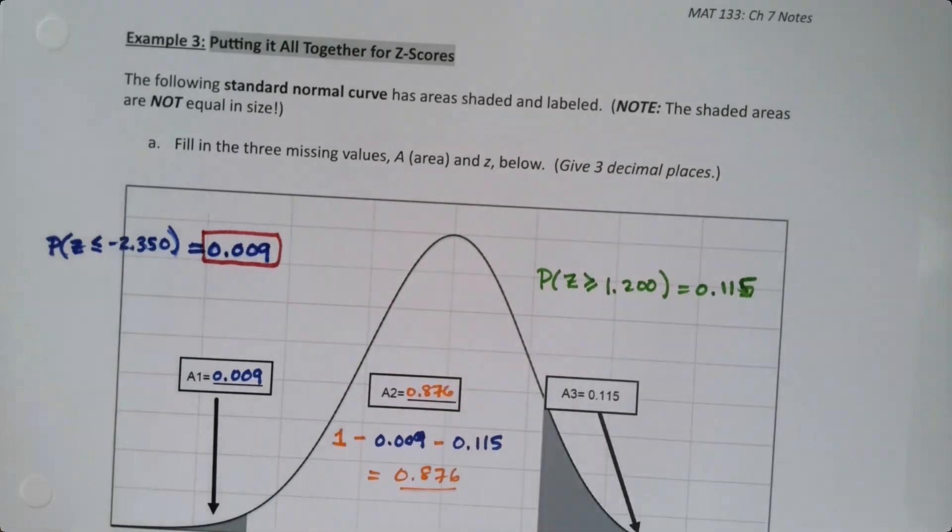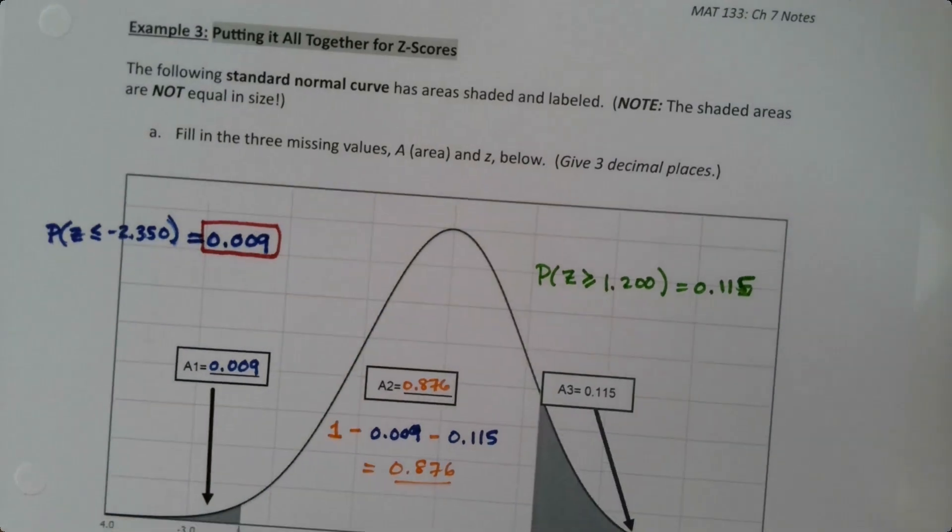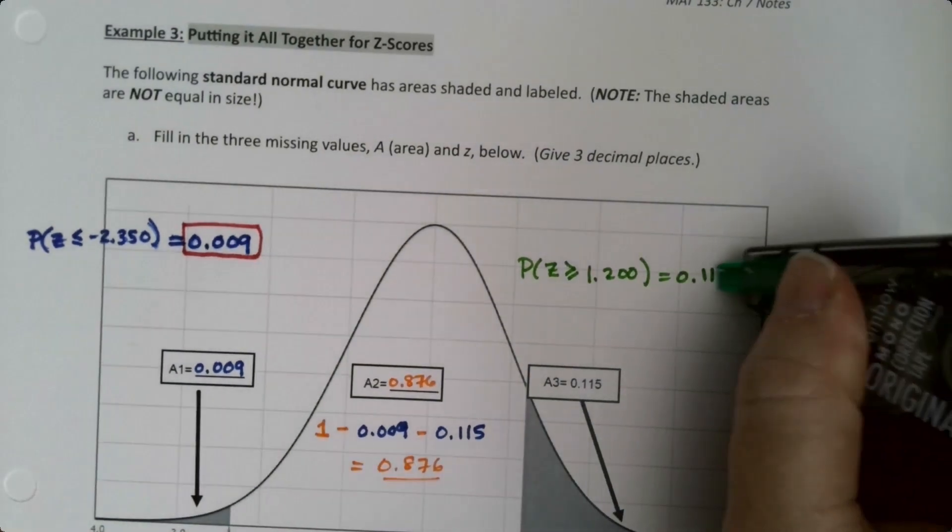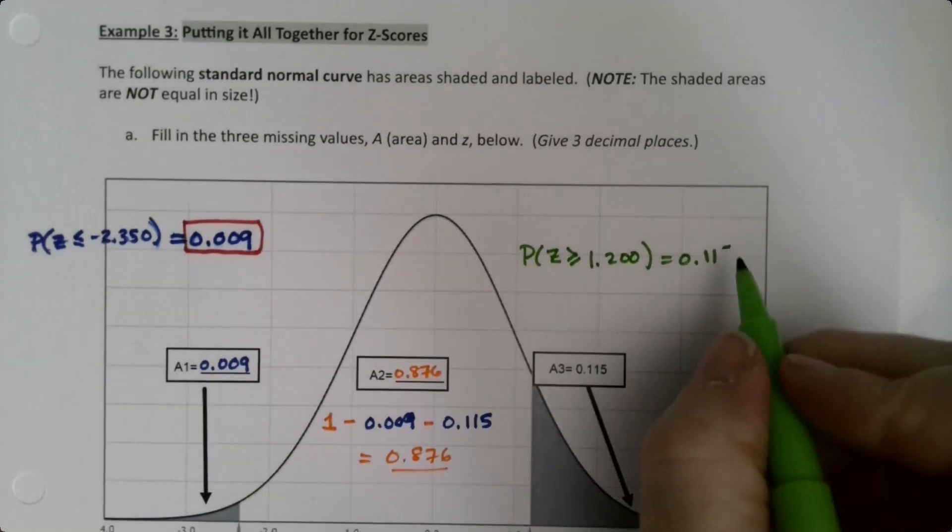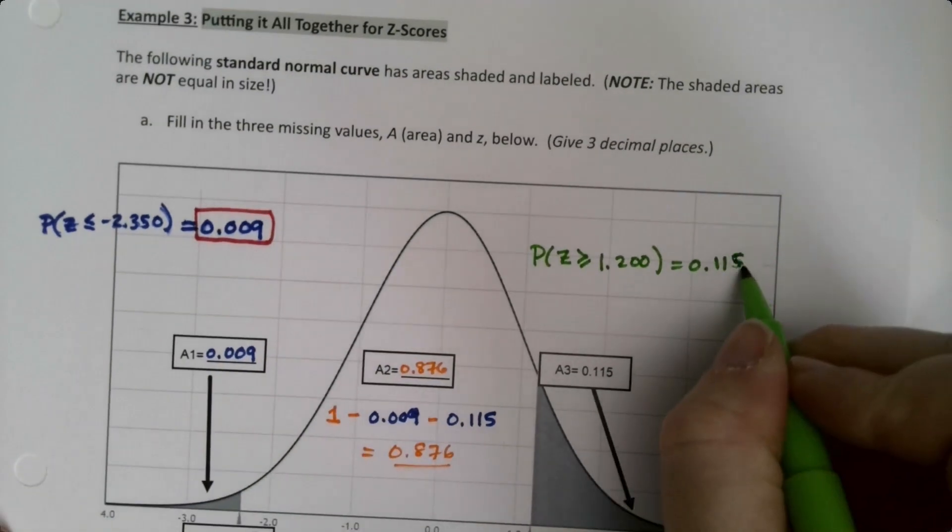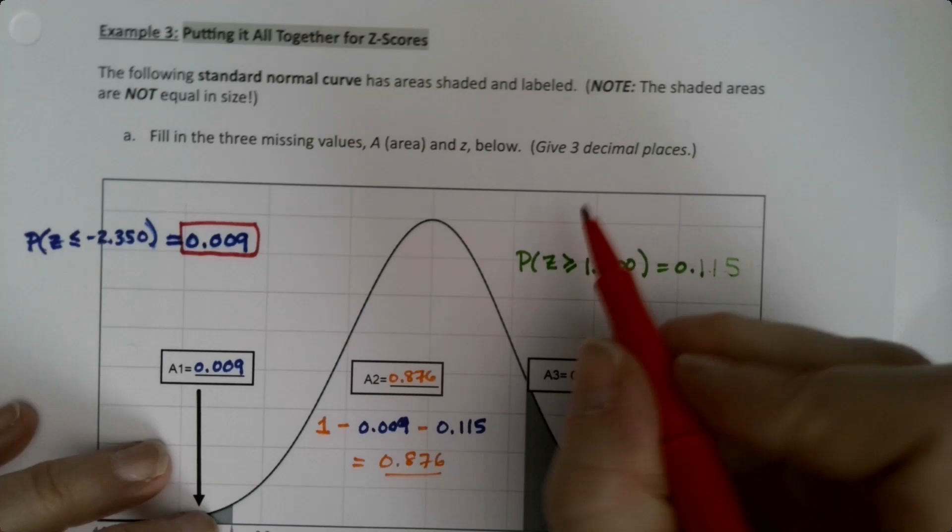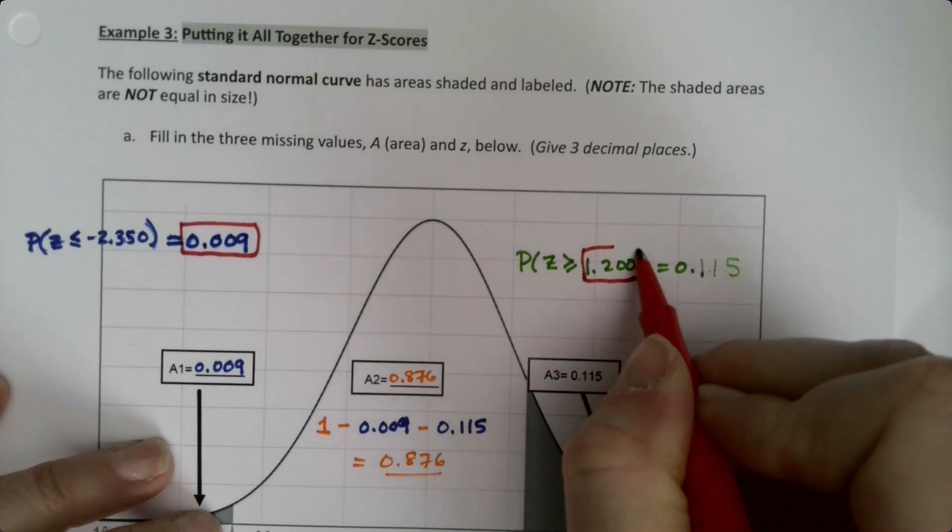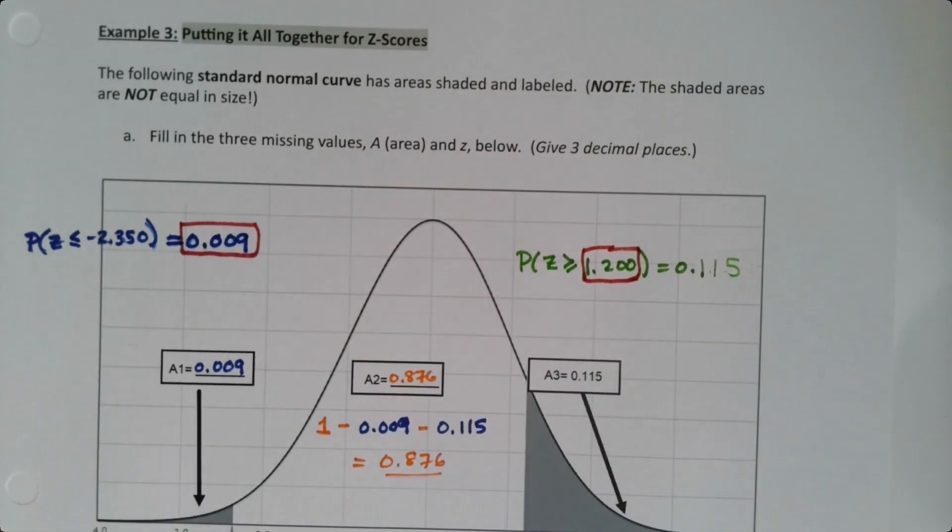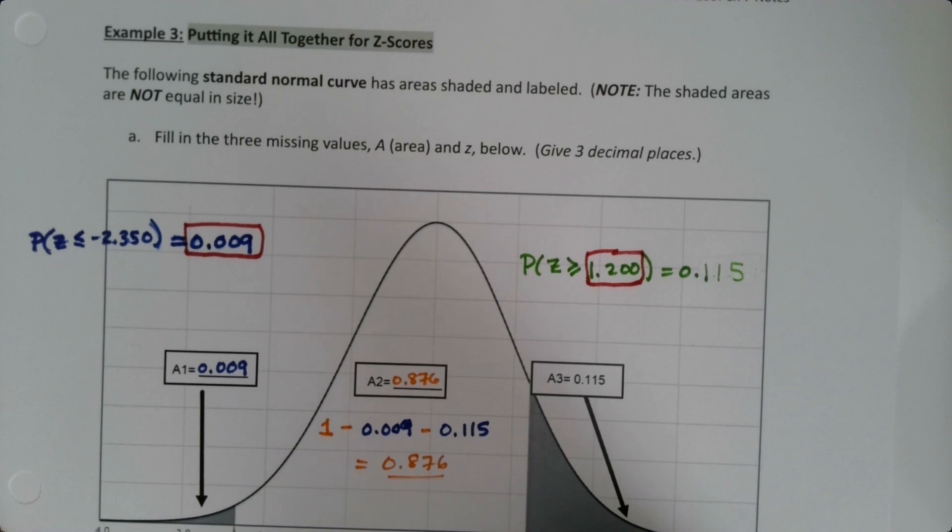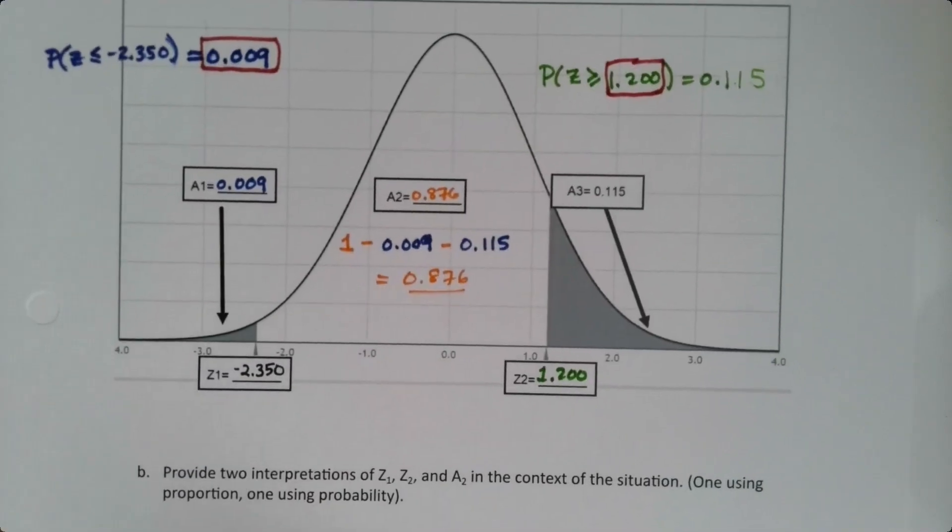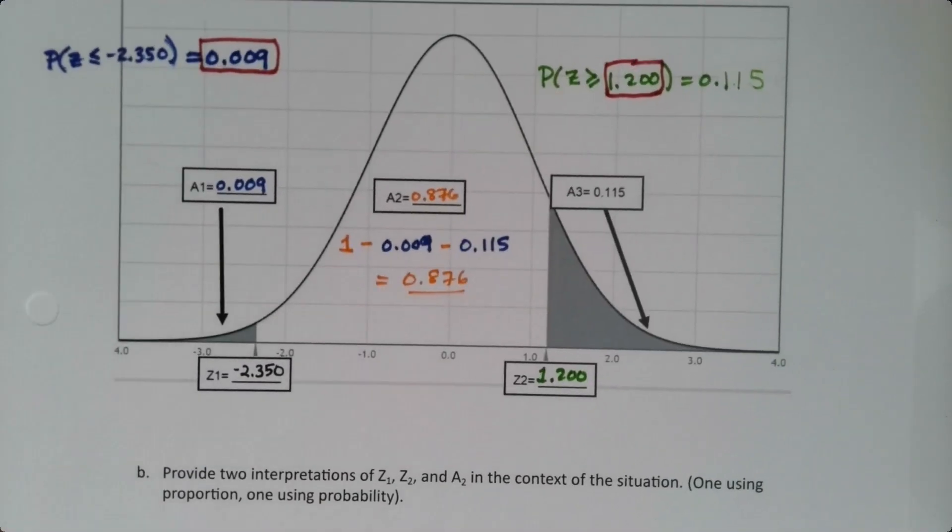So let me write that down. So the probability that Z is greater than or equal to 1.200 is 0.115, right? It's greater than or equal to because it's going to the right. Oh, my five got all weird. Sorry about that. Okay. I'm not sure I made it any better. There we go, I fixed it. So this is the answer right here, it's the 1.200. So this Z-score is 1.200.